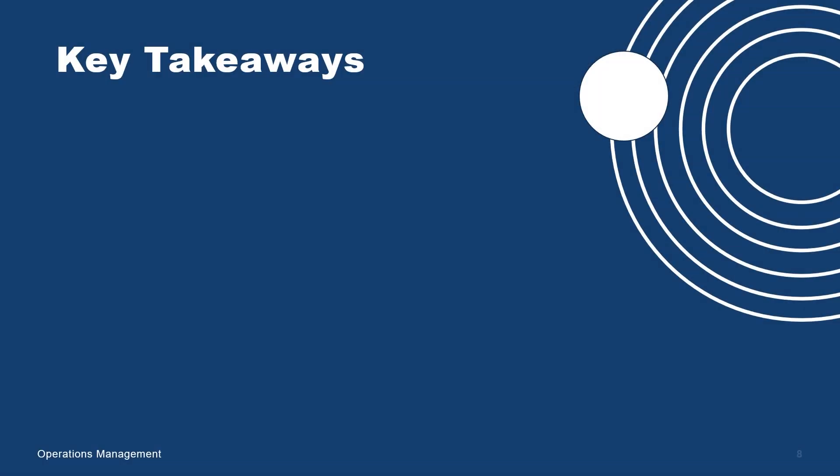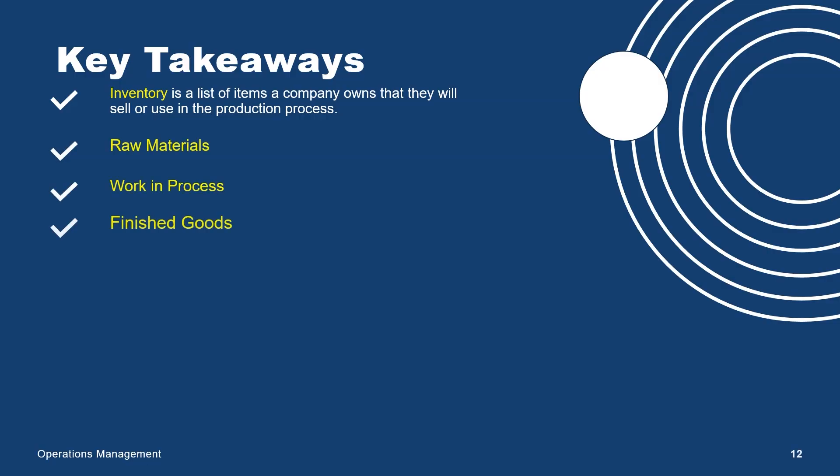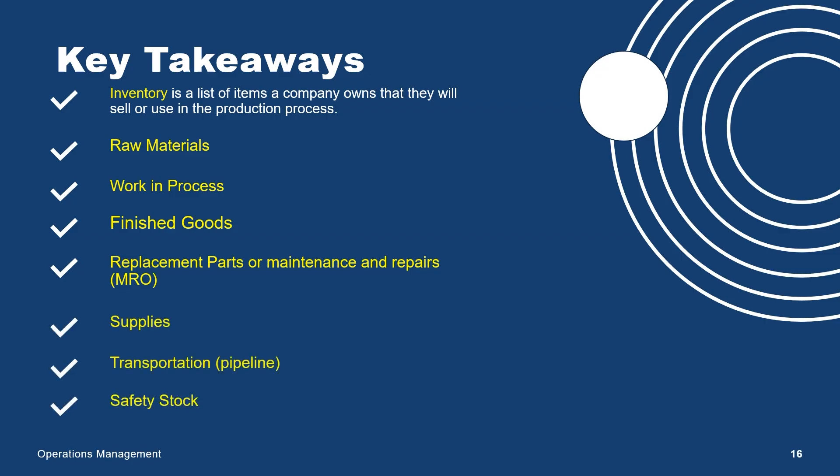Key takeaways: inventory is a list of items that a company owns that they will either sell or use in production. There are a few different types of inventory to be aware of: raw material, work in process, finished goods, replacement parts inventory, supplies, transportation pipeline inventory, and safety stock. Remember, inventory is cash. You don't buy a ton of inventory unnecessarily because you don't want your cash tied up in products or on store shelves. That's why companies use different models and inventory systems to maintain accurate inventory at all times.